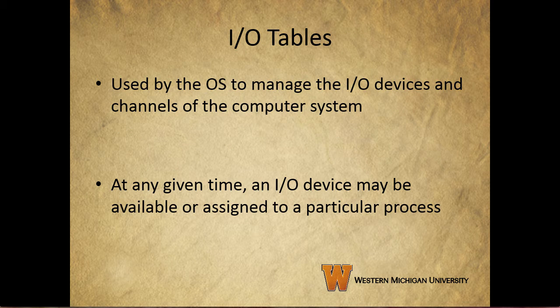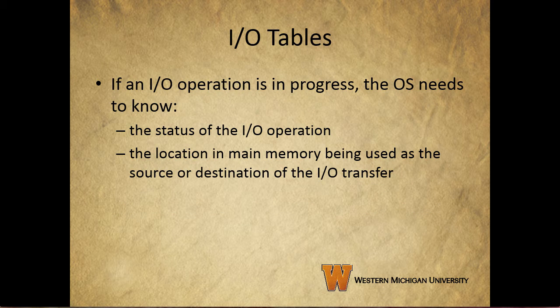IO tables are used by the OS to manage the IO devices and channels of the system. At any given time, an IO device may be available or assigned to a particular process. If an input-output operation is in progress, the operating system needs to know the status of the IO operation and the location in main memory being used as the source or destination of the transfer.